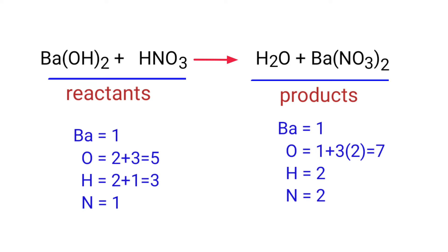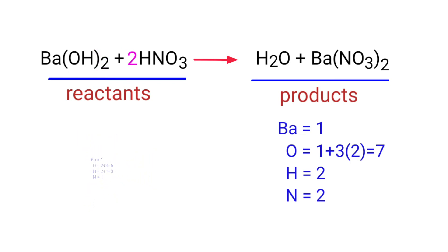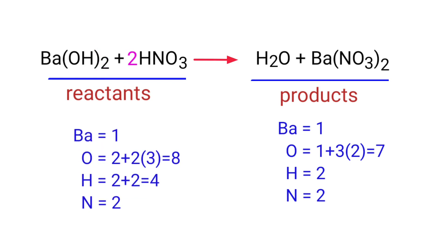In this equation we need to balance the nitrogen atoms first. To do this we need to put a coefficient of 2 in front of HNO3. The nitrogen atoms are now balanced.